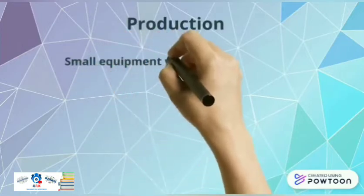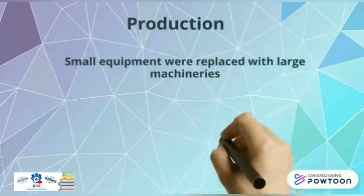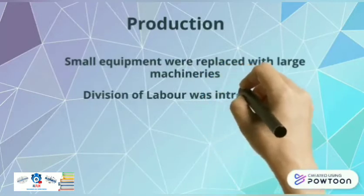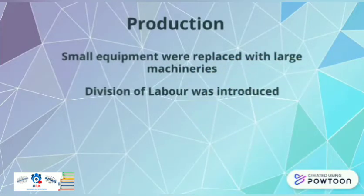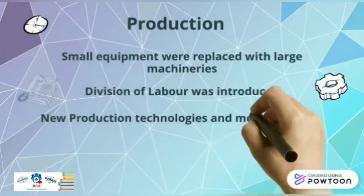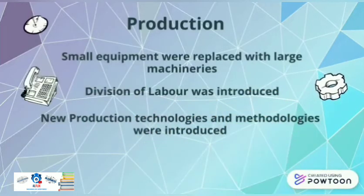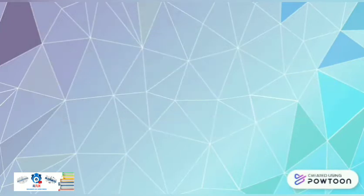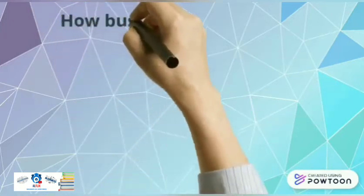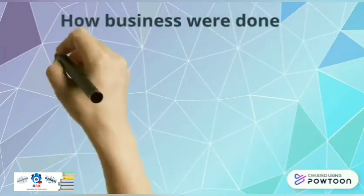In production, the small equipments were replaced with large-scale machineries. Division of labor was put in place, and new production technologies were introduced. Small-scale factories were turning into large-scale factories.